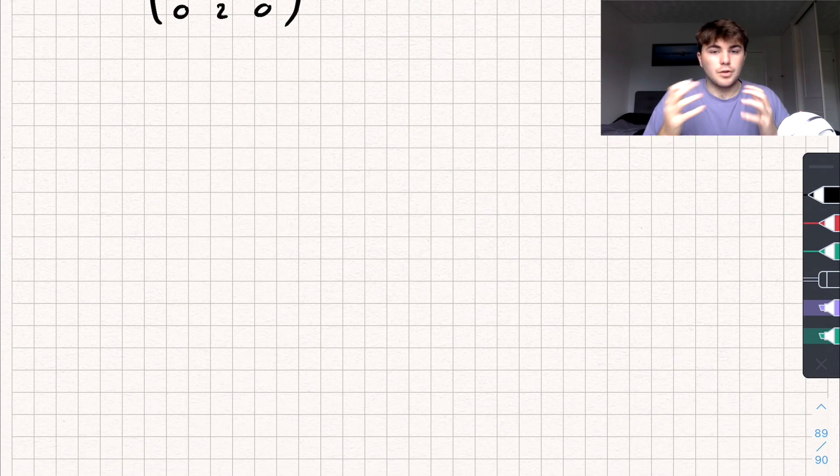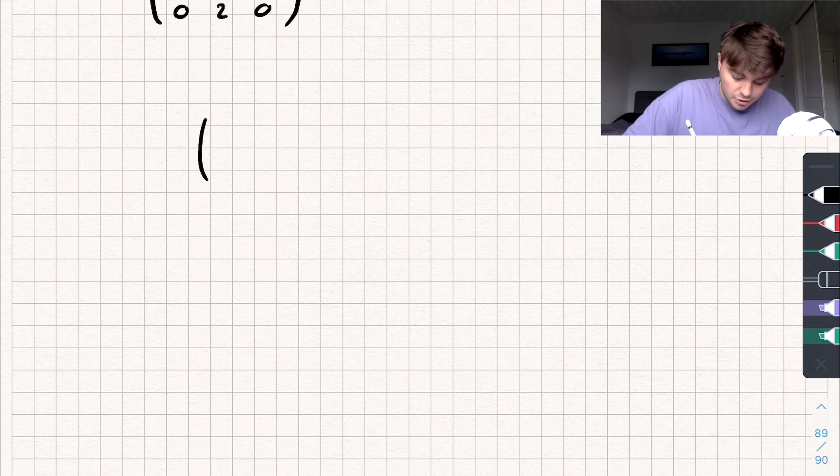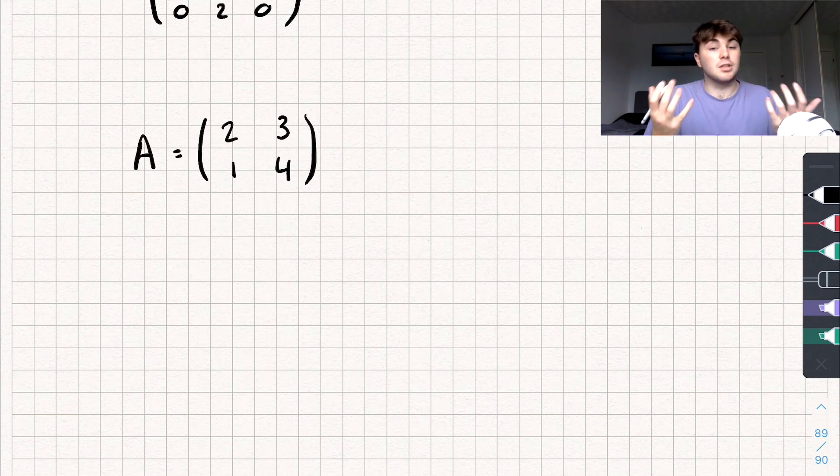So let's learn about sort of notation to do with matrices. So when we write about matrices, we usually call them a big capital letter. So we could write a matrix here, say two, three, one, four, and we would usually call it capital A. I don't know why, but matrices usually are given capital letters.